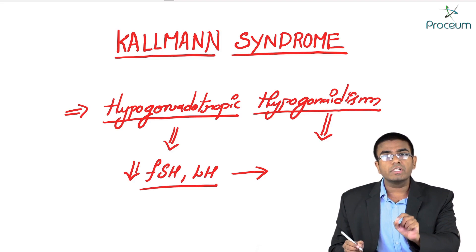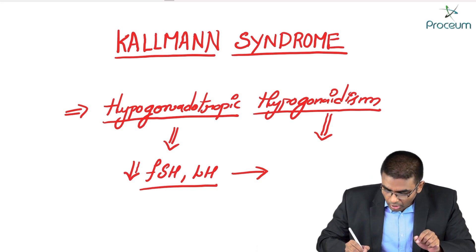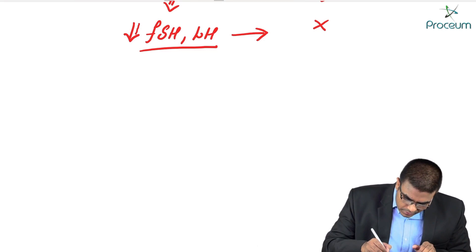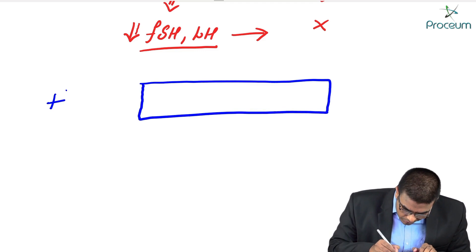Hypogonadotropic hypogonadism means: because of the absence of gonadotropic hormones, the gonads are not functioning. This is the basic concept. Now let's see what actually happens physiologically in a female — discussing the hypothalamus-pituitary-ovarian axis.